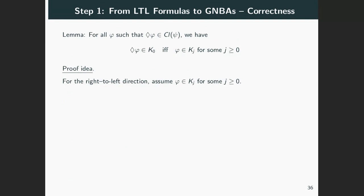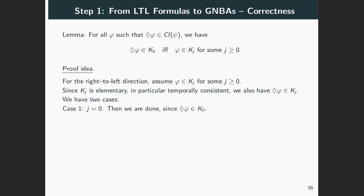For the implication in the opposite direction, we assume φ in Kⱼ for some j. Since Kⱼ is elementary and therefore temporally consistent, we obtain that eventually φ is in Kⱼ. Now we distinguish two cases depending on whether j is zero or not. If j is zero, then there's nothing to prove. If j is greater than zero, let j' be its predecessor. We apply the definition of the transition relation to obtain that eventually φ must also be in Kⱼ'.